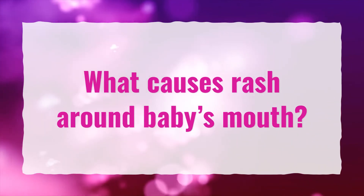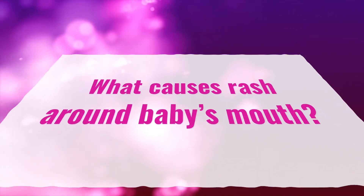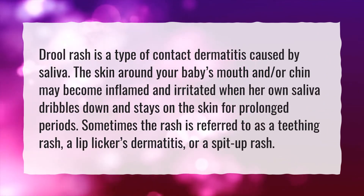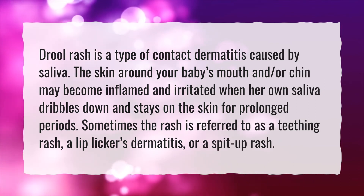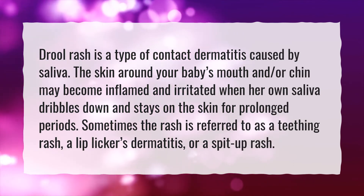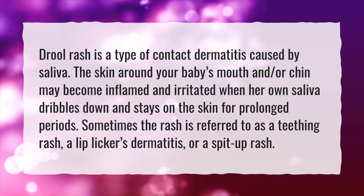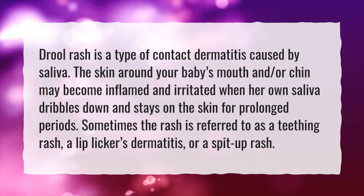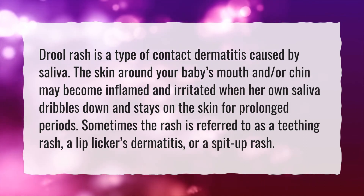What causes rash around a baby's mouth? Drool rash is a type of contact dermatitis caused by saliva. The skin around your baby's mouth and/or chin may become inflamed and irritated when her own saliva dribbles down and stays on the skin for prolonged periods. Sometimes the rash is referred to as a teething rash, a lip licker's dermatitis, or a spit-up rash.